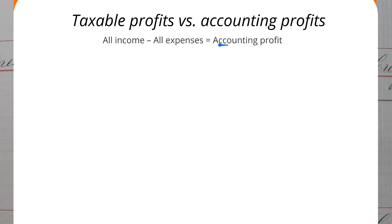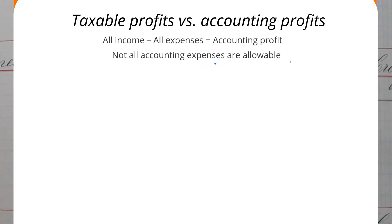However, when calculating a business's corporation tax that is payable, this tax is not calculated based around a company's accounting profit figure. This is because there are various expenses included in the calculation of accounting profit that are not allowable for taxation purposes. So essentially, when calculating our taxable profit, we must add back these non-allowable expenses to our accounting profit to get our taxable profit, and it is based around this adjusted sum that we then calculate our corporation tax.